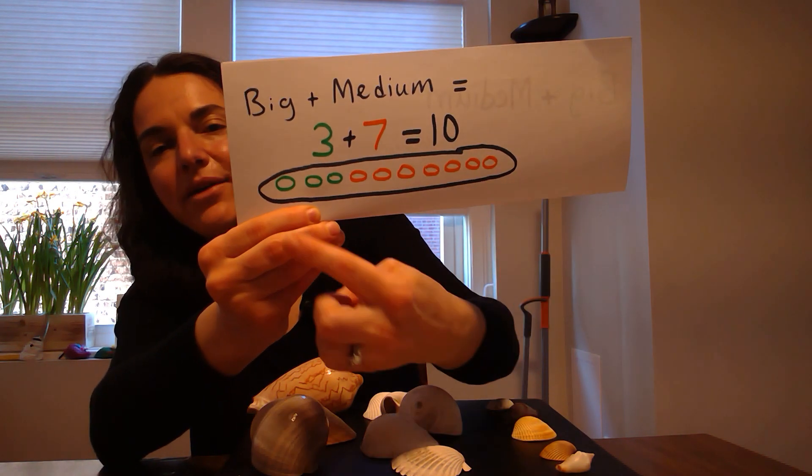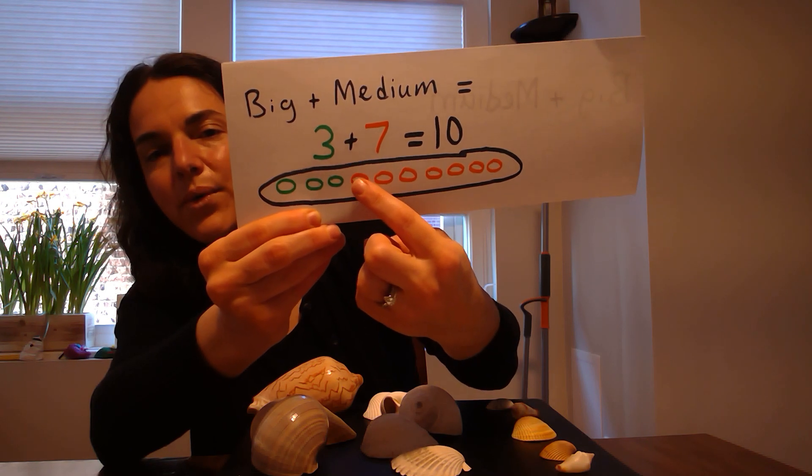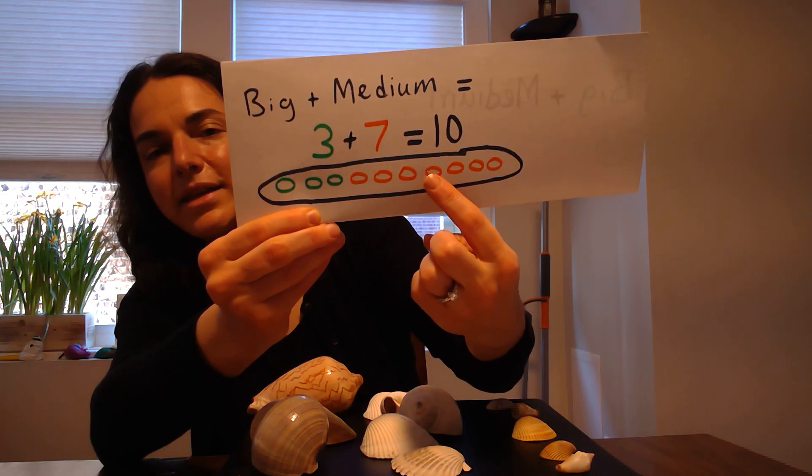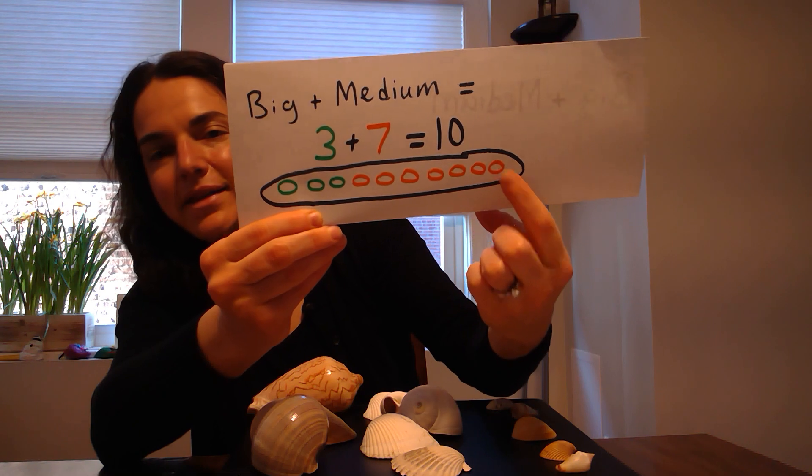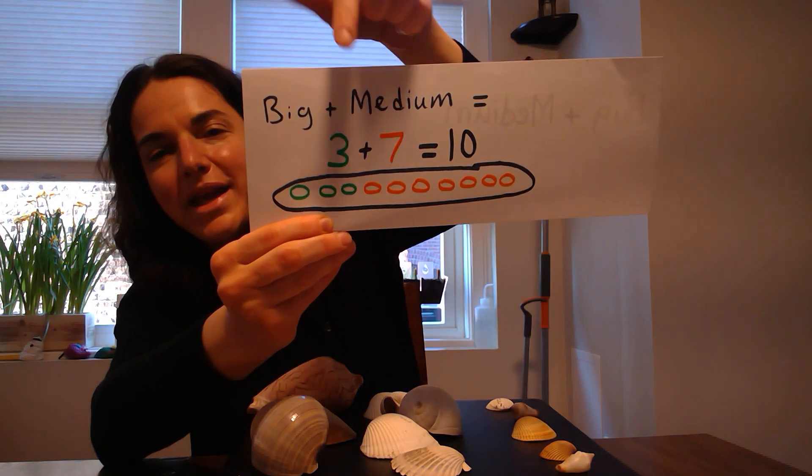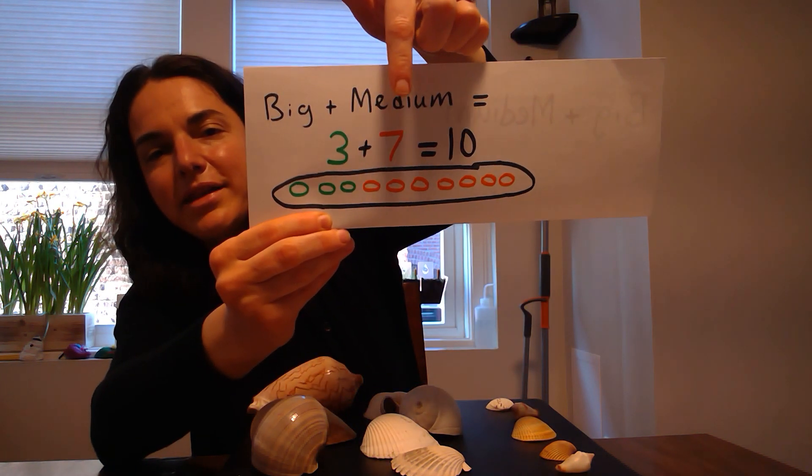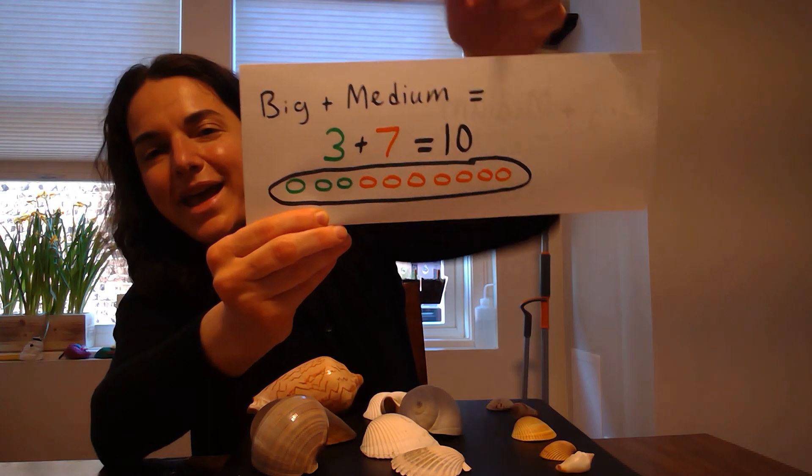Then I counted 3, 4, 5, 6, 7, 8, 9, 10. And I got my answer. 3 plus 7 equals 10 in all.